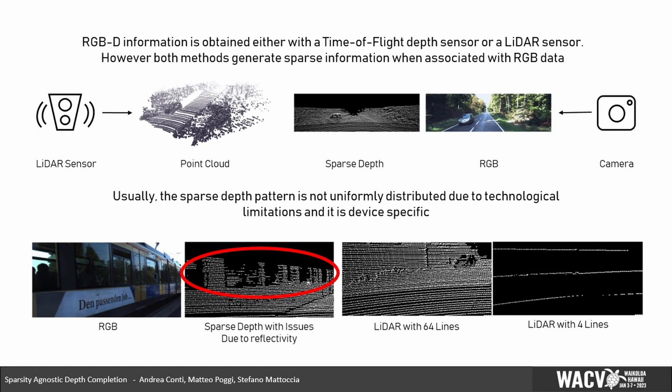In real scenarios, additional issues may lead to an even higher sparsity, such as multipath interference, low reflectivity or high reflectivity surfaces, leading to large unobserved regions and to an uneven distribution of sparse points over the image plane. It's worth mentioning finally that each depth sensor usually generates a different specific depth pattern and density.